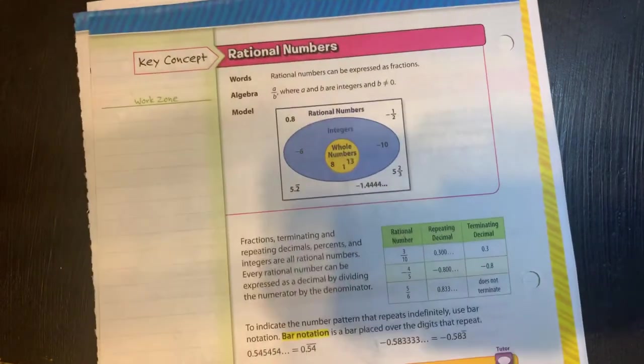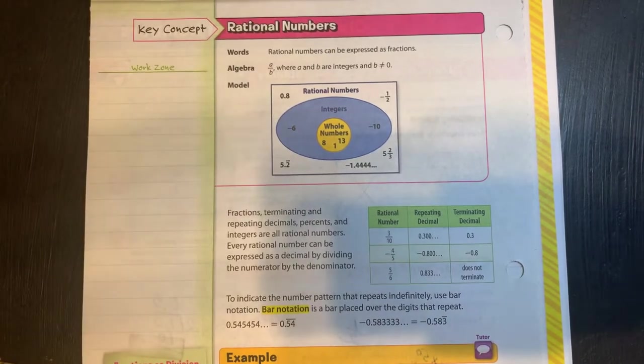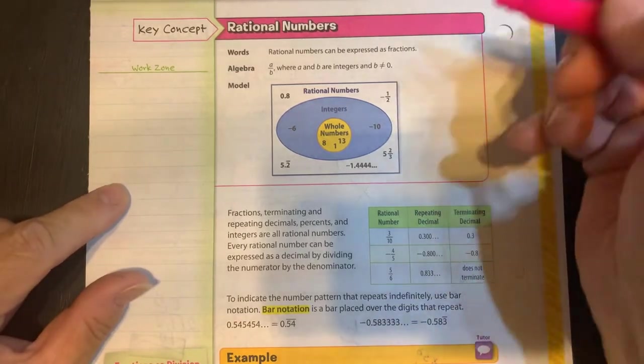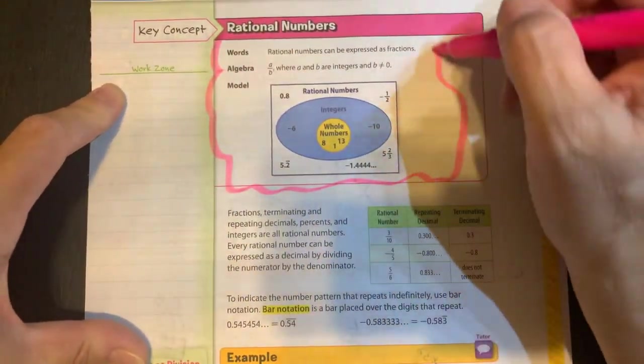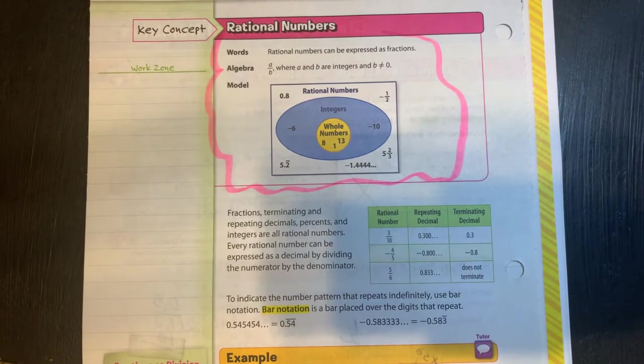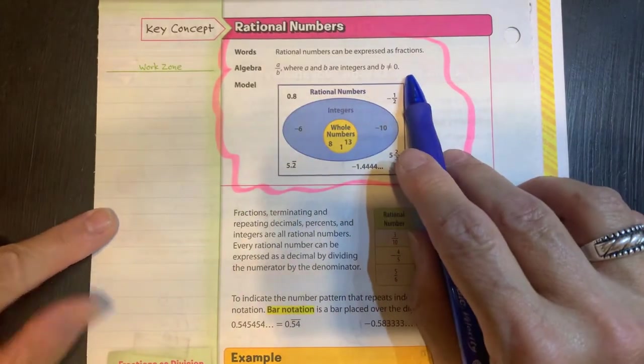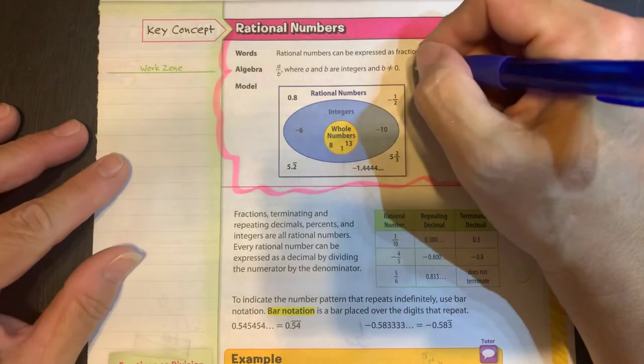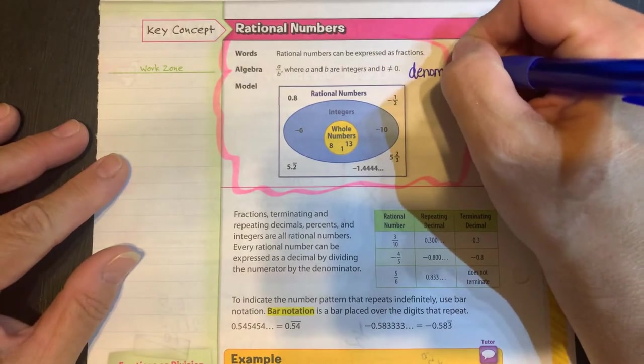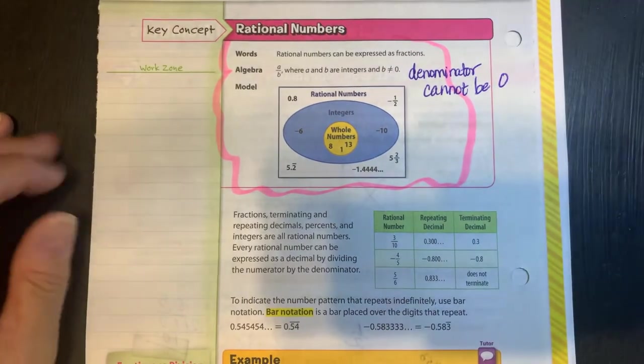Now looking on the back, we're going to talk about the group of rational numbers. I love, love, love this diagram. So it says rational numbers can be expressed as fractions. Now this part right here, maybe a little bit, you might look at that and go, what are they talking about? It says a divided by B where a and B are integers, B cannot be zero. So basically they're just saying that rational numbers are fractions and your denominator cannot be zero.